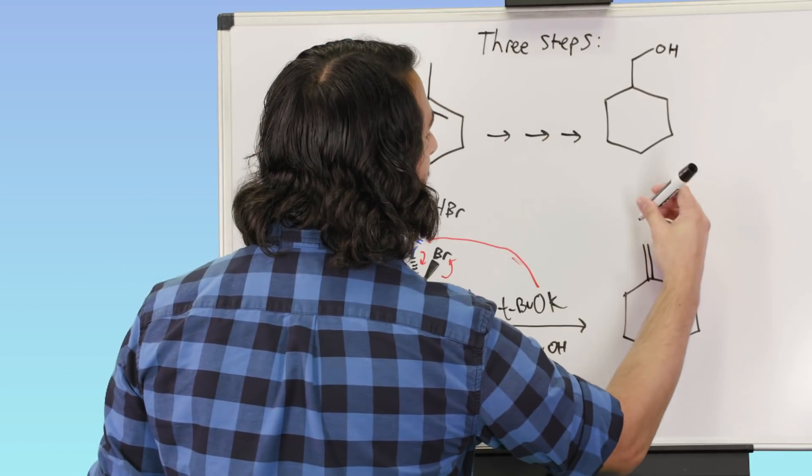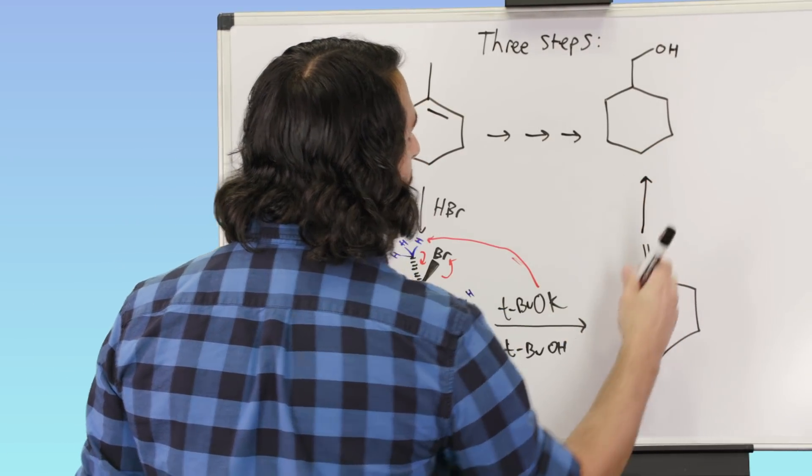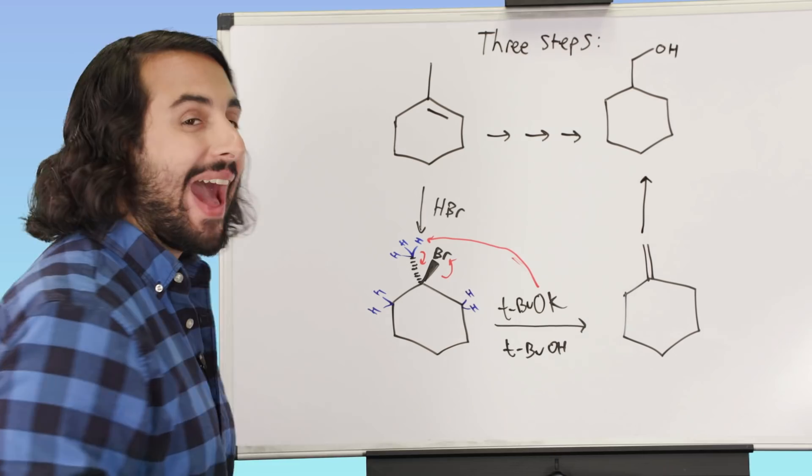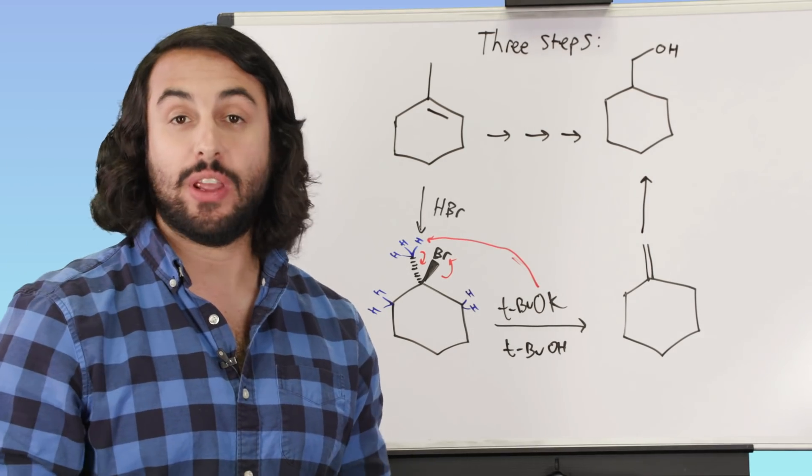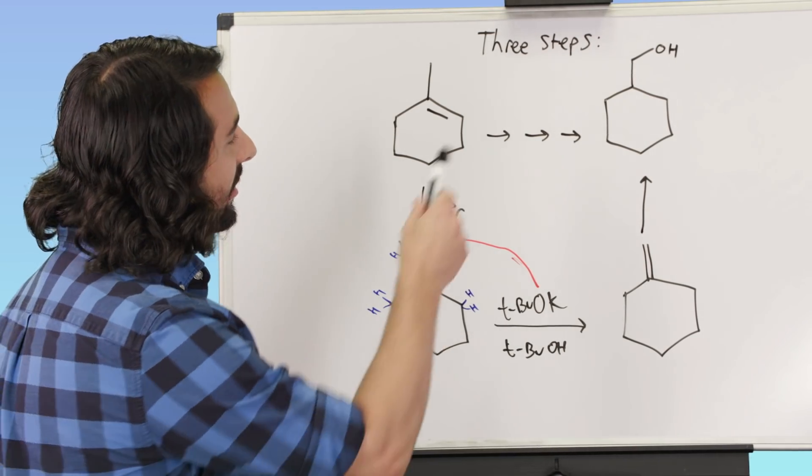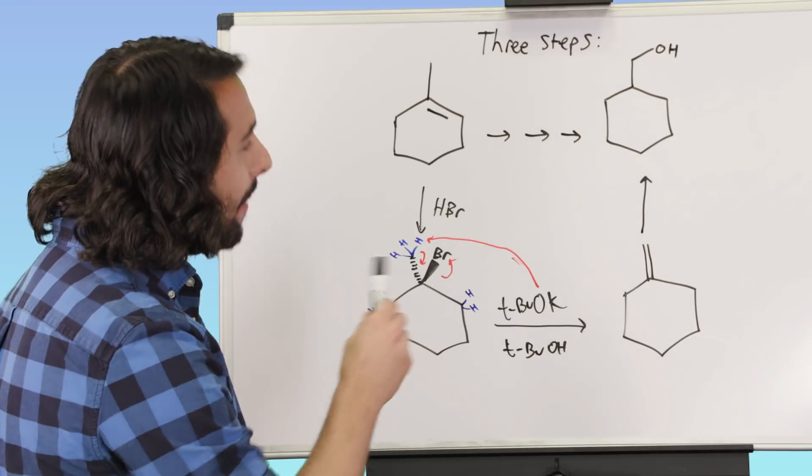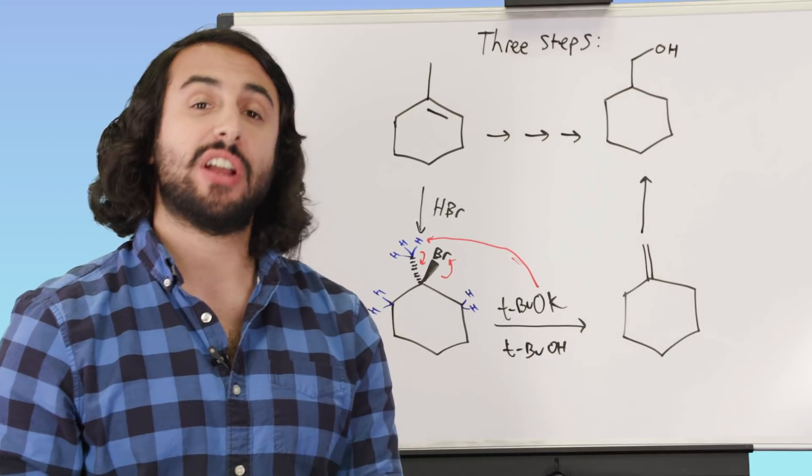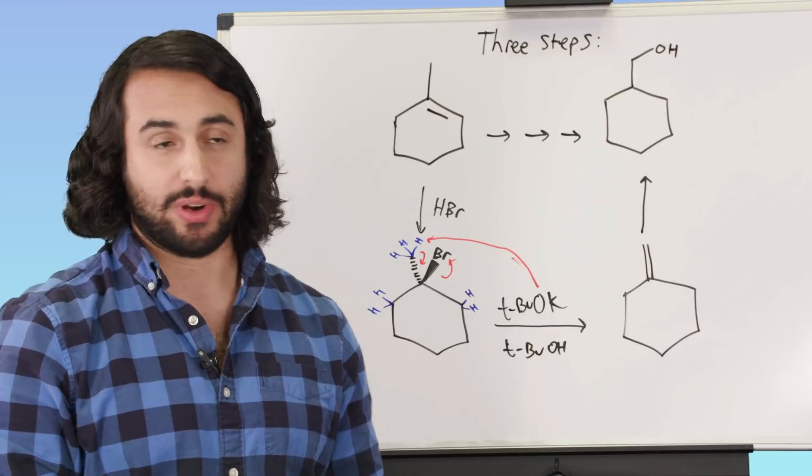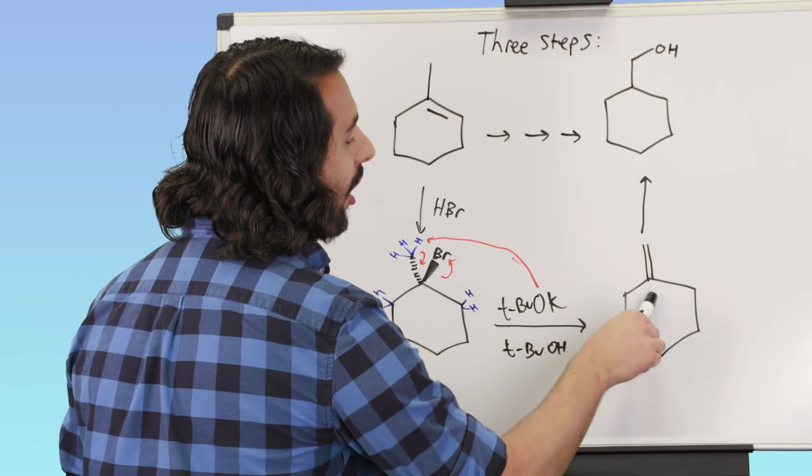And now we know we want to do some kind of hydration because we are primed, we've got this pi bond, if we add an H and an OH, then we are going to be able to get the product that we want, but do we want to do a Markovnikov hydration or an anti-Markovnikov hydration?